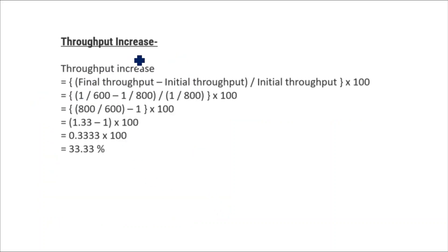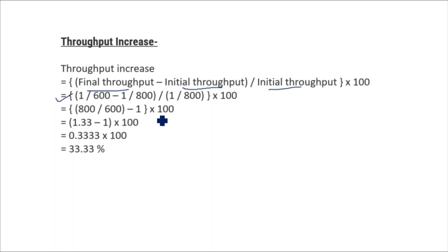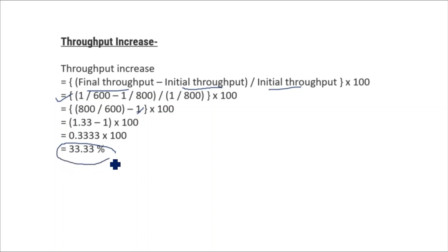Now we will compare. Throughput increase is calculated as: (final throughput minus initial throughput) divided by initial throughput, multiplied by 100. So (1/600 minus 1/800) divided by 1/800, multiplied by 100. Solving this gives 800/600 minus 1, which is 1.33 minus 1 equals 0.33, multiplied by 100. The percentage increase in throughput is 33.33%.